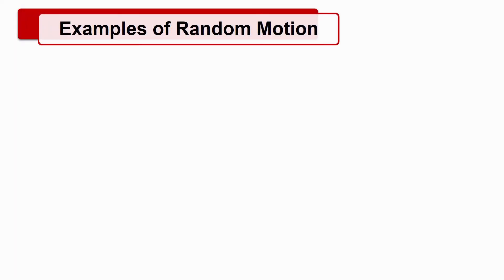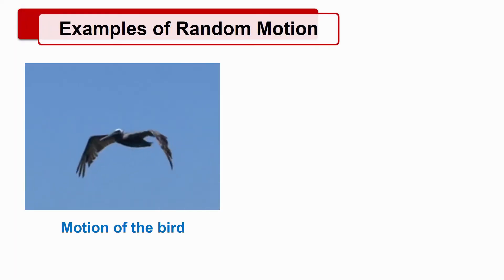Examples of random motion are motion of the bird, motion of the ants, etc.